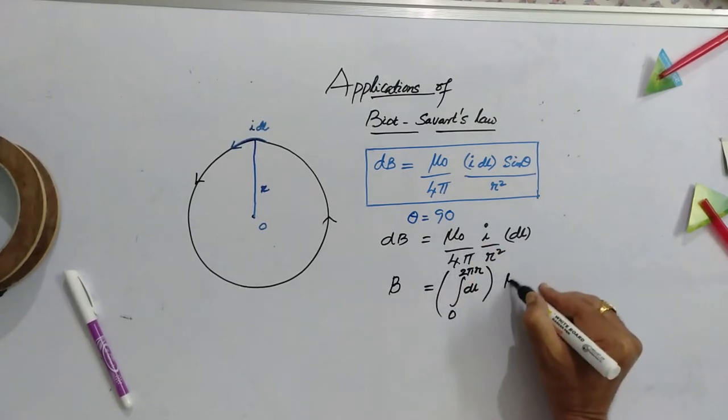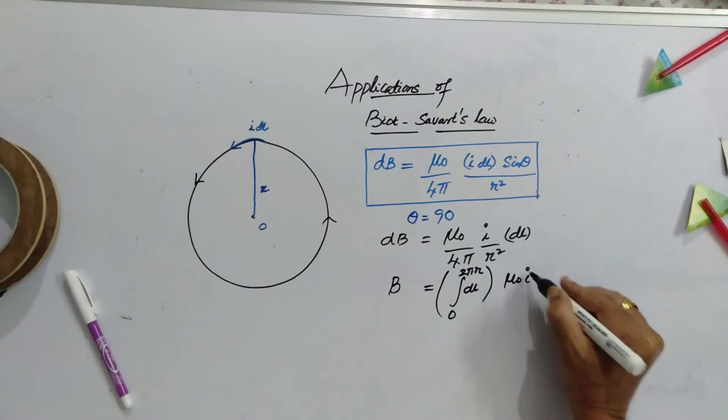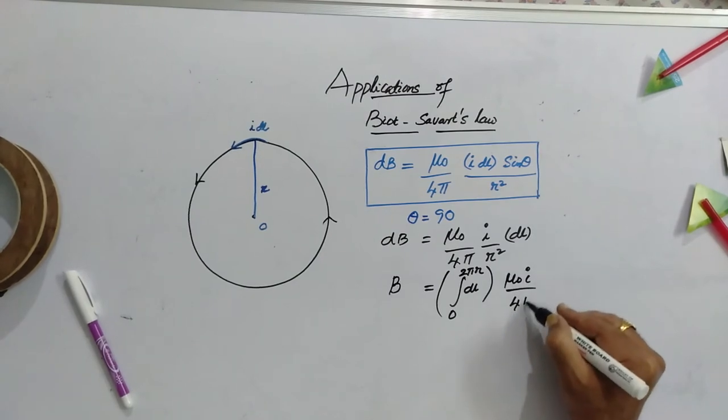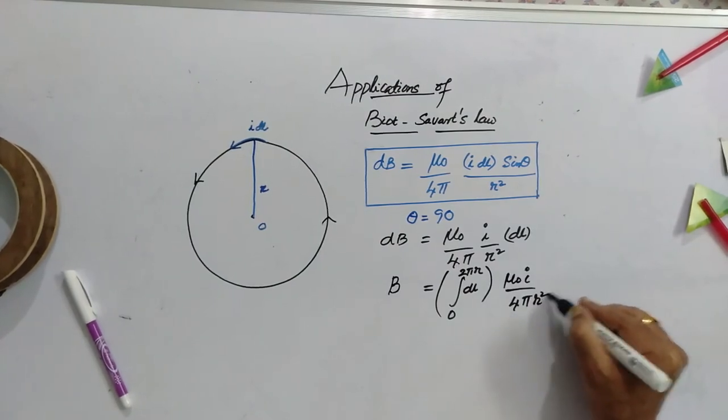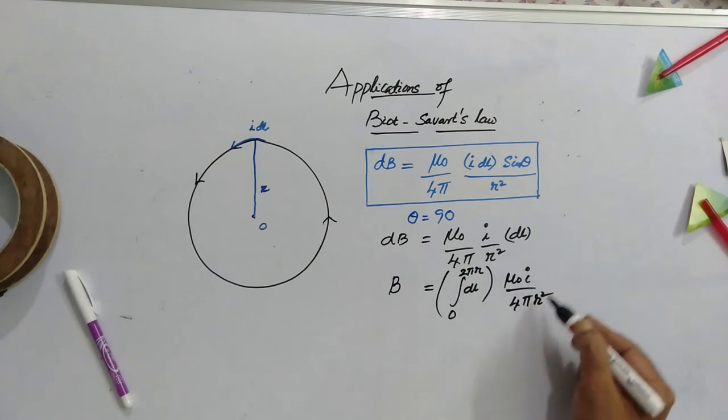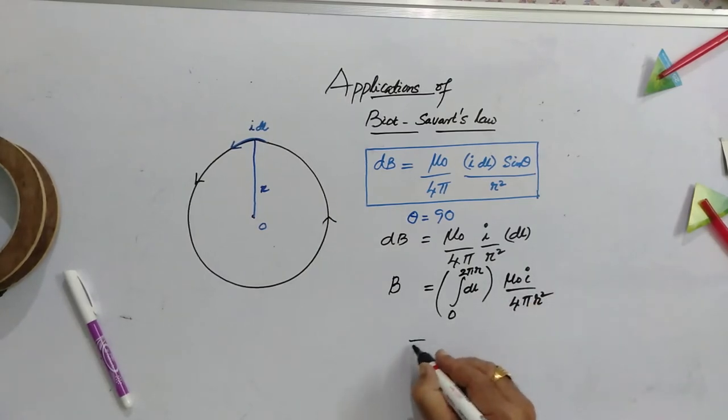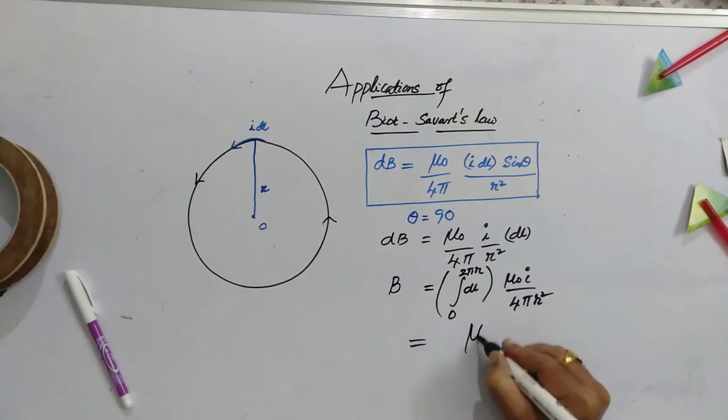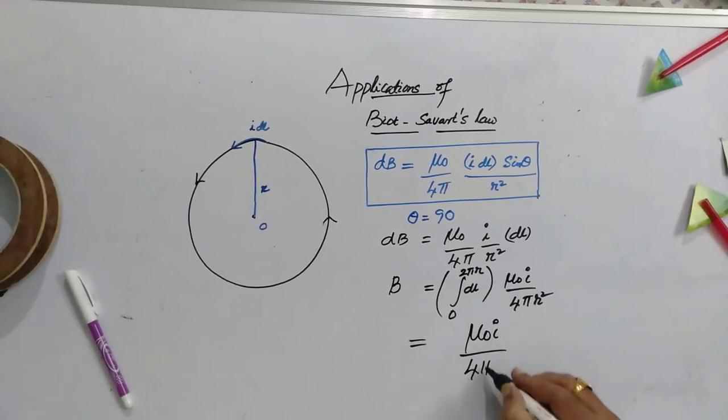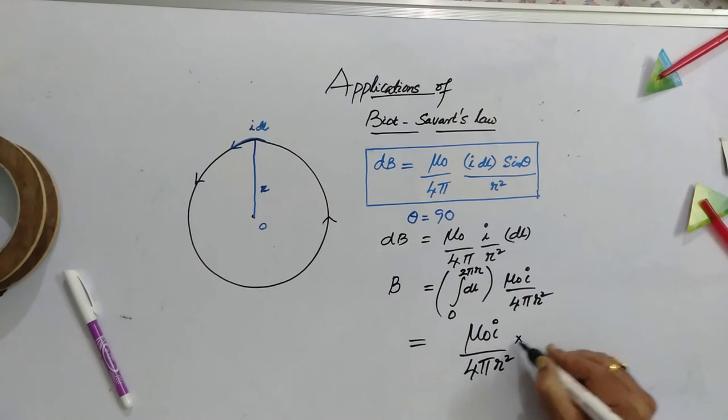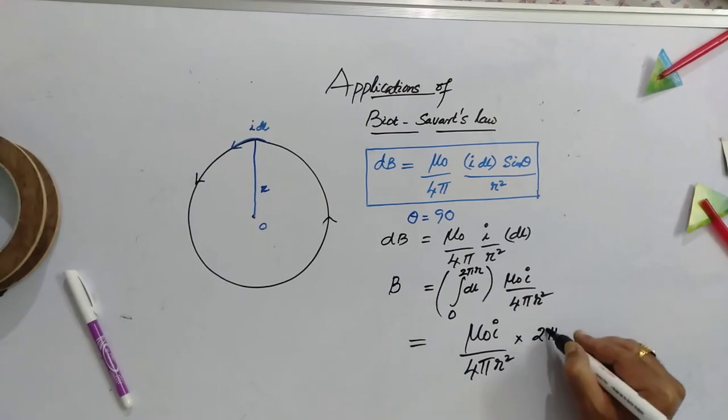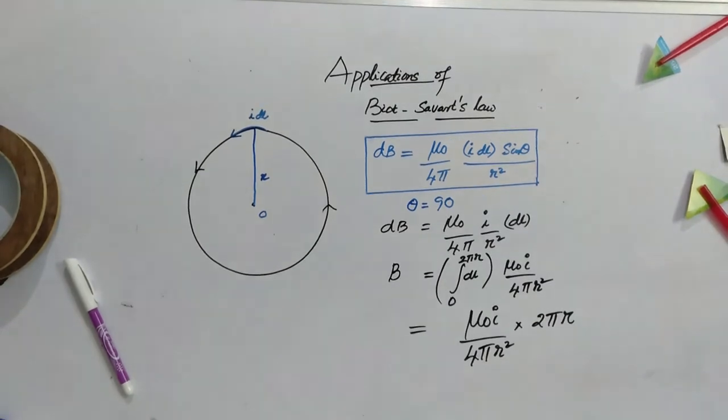Of course, outside mu 0 i by 4 pi r square is already there and these are all constants. Now, if you write the integration of DL, it will be 2 pi r.